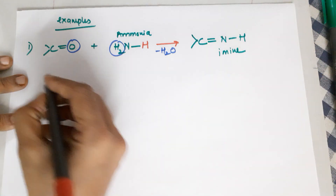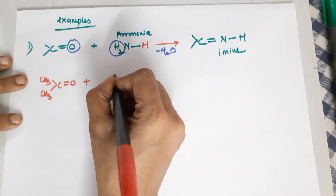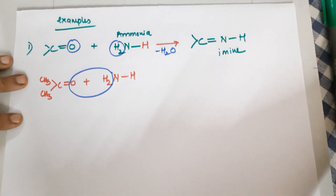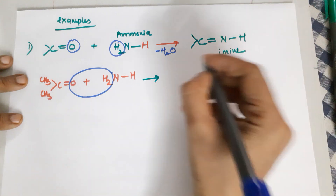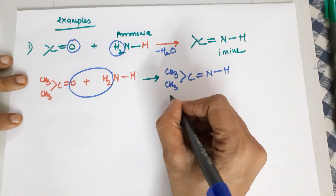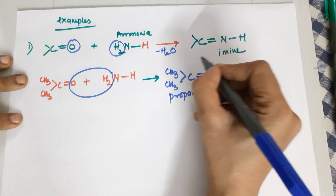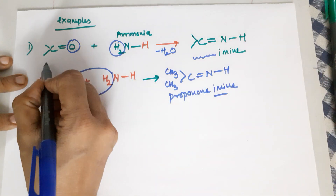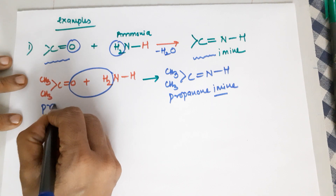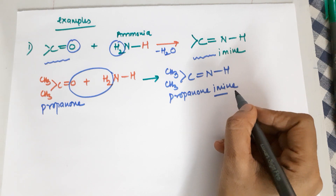This product is called an imine. For example, if the starting material is acetone (propanone) and we treat it with ammonia, the reaction involves water loss and leads to the formation of a product called propanone imine. The imine follows the prefix of the name of your aldehyde or ketone — since the reactant was propanone, the product is simply propanone imine.